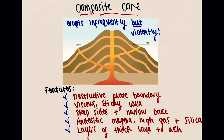The second is a composite cone volcano. Composite cone volcanoes are essentially the opposite of a shield volcano. They're found on destructive plate boundaries rather than constructive plate boundaries. The lava and magma tend to be viscous and sticky rather than runny. Because it's viscous and sticky, the lava is not able to travel a very long distance before it solidifies, meaning we get very steep sides with a very narrow base along the bottom.